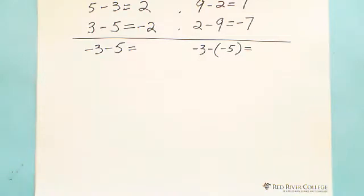Second: small number subtract the big number, you get the negative. Big number subtract the small number, you get the positive. This is always true. And also, I introduce you to a number line, which will make more sense, make it easier to understand.